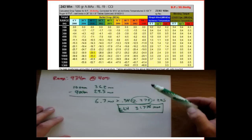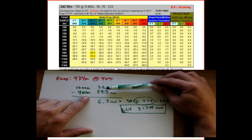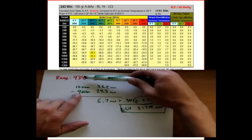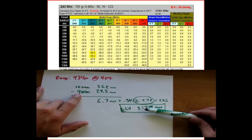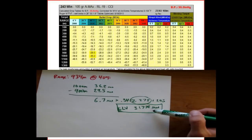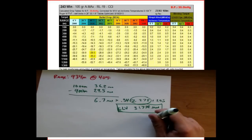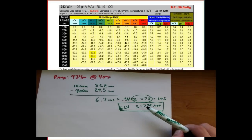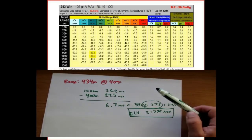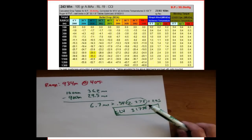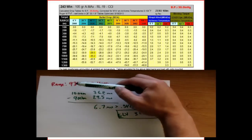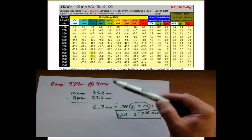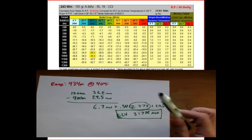Let's verify this makes sense. Our drop at 900 was 29.5 and at 1,000 it was 36.2. At 31.7, this value is between those numbers and closer to the 900 value, which makes sense because it's 934 — not 984. So that's how we interpolated to get our drop data. Find the difference, multiply by the percentage you are between the two range values, and add that to the lower number to get your drop value.